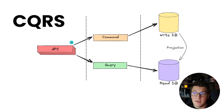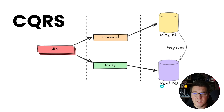Here you have an API request coming into your application. Let's say that this request is a command. A command is a type of request that updates the database, and in this case I have a separate database for commands, which is called the write database. Then I've got a way to project these changes into the read database, which is used to serve queries. Queries are API requests that are responsible for reading data only, and this is essentially what CQRS does.